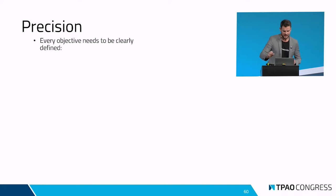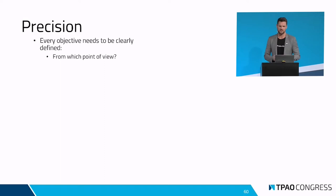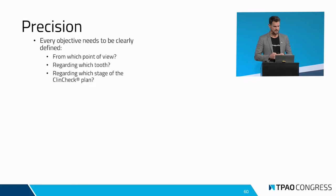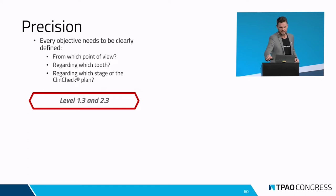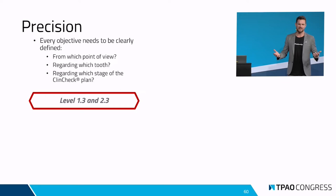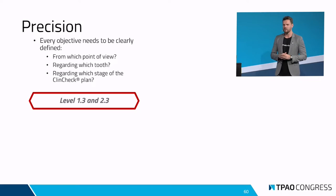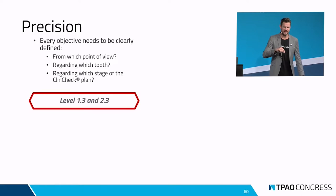Das ist ein relativ einfaches Beispiel, aber es beschreibt relativ gut und plakativ, wie einfach eine präzise Kommunikation ist. Wir müssen genau beschreiben aus welcher Sicht, in Bezug auf welchen Zahn und in Bezug auf welche Stufe im digitalen Behandlungsplan. Wir haben heutzutage die 3D-Tools, aber wir kommen noch aus der Zeit, wo es keine 3D-Tools gab, und da mussten wir extrem präzise sein. Wenn wir sagen, wir wollen 1,3 und 2,3 nivellieren, ist das für uns relativ klar – der Techniker auf der anderen Seite kann aber hier anfangen zu schwitzen, weil er so viele unterschiedliche Möglichkeiten hat, das zu interpretieren.